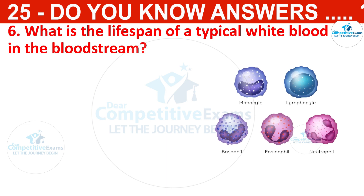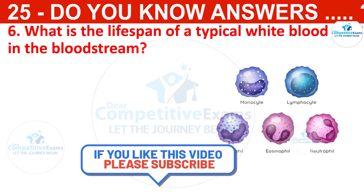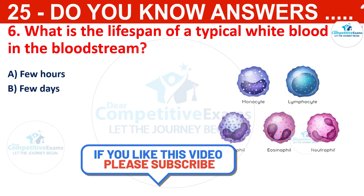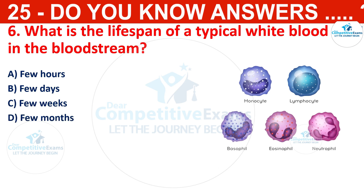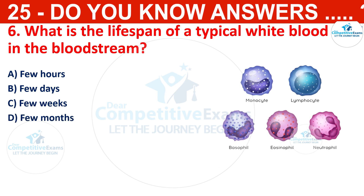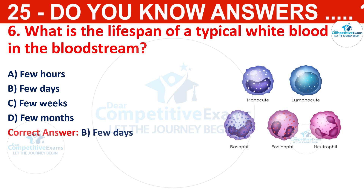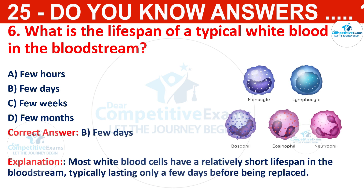What is the lifespan of a typical white blood cell in the bloodstream? The options are a few hours, a few days, a few weeks, or a few months. The correct answer is a few days. Most white blood cells have a relatively short lifespan in the bloodstream, typically lasting only a few days before being replaced.